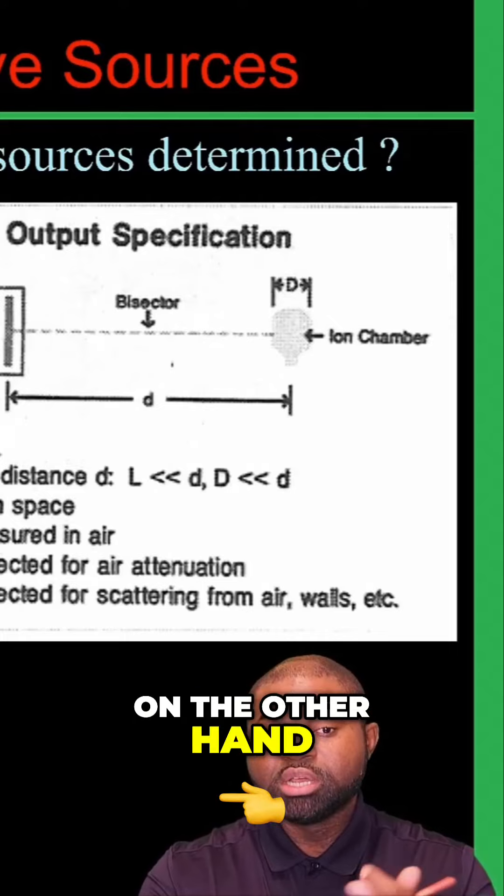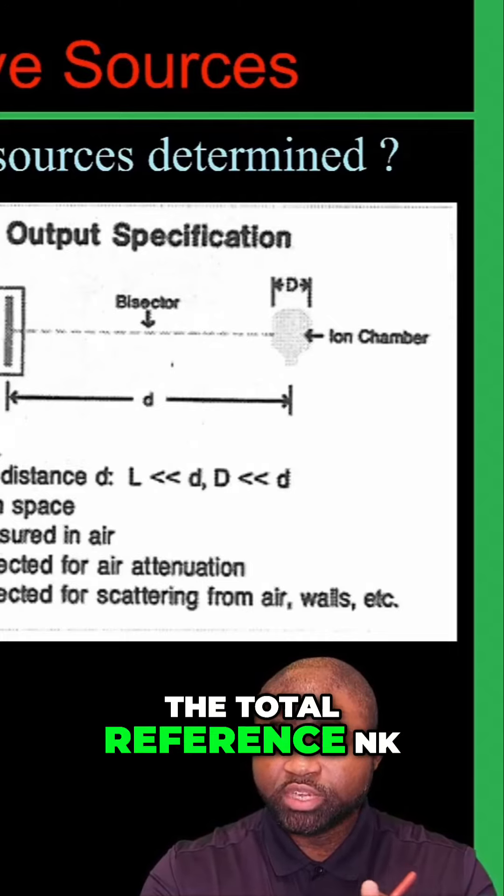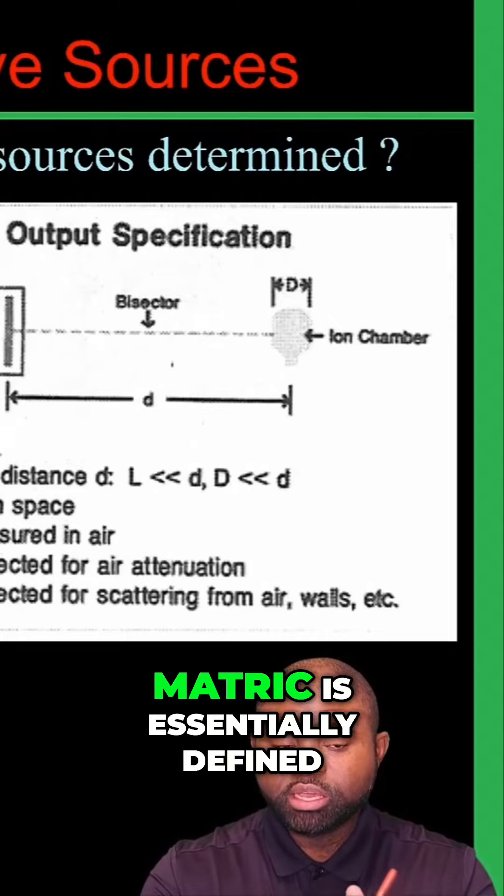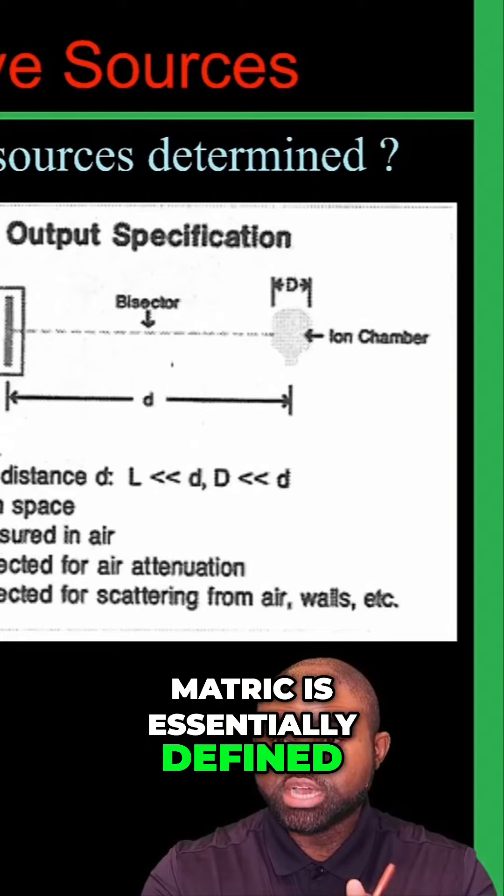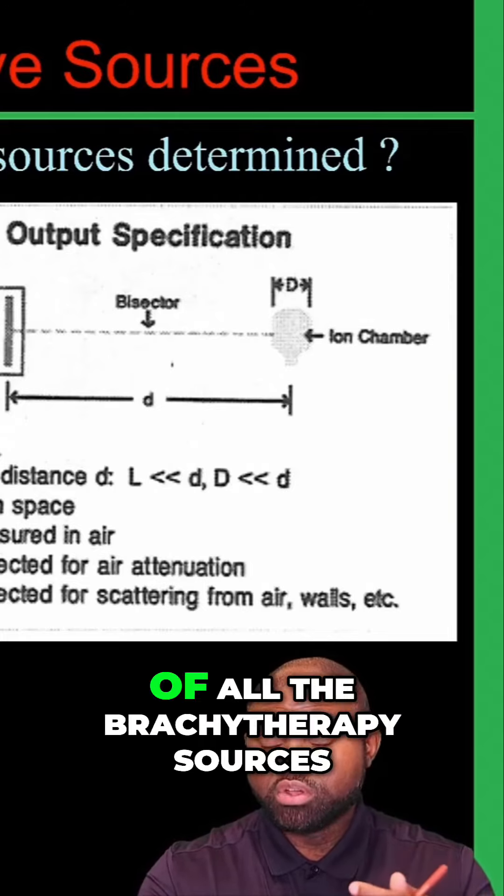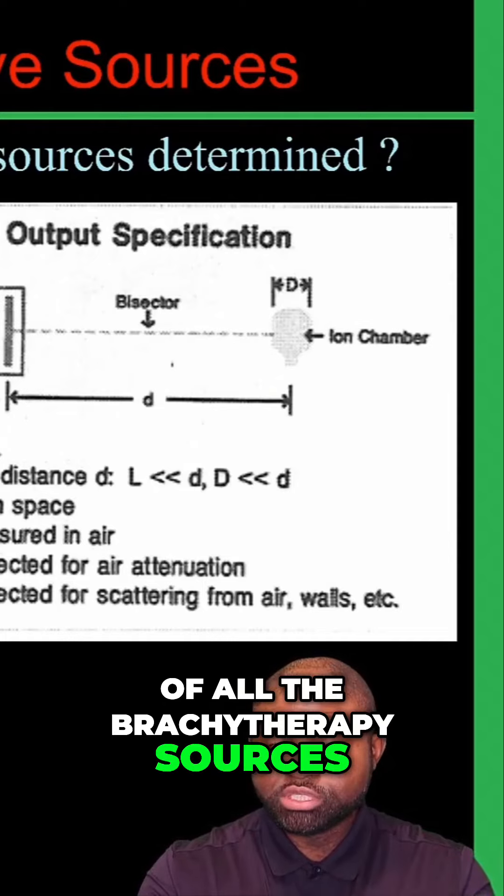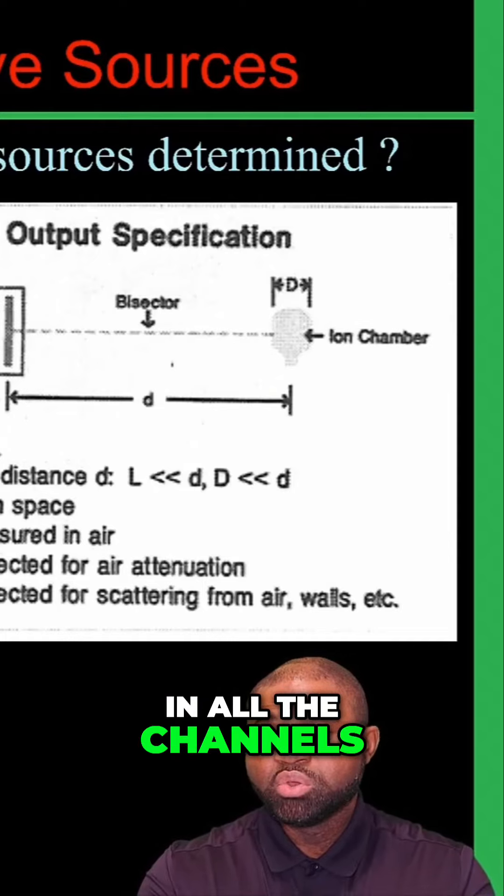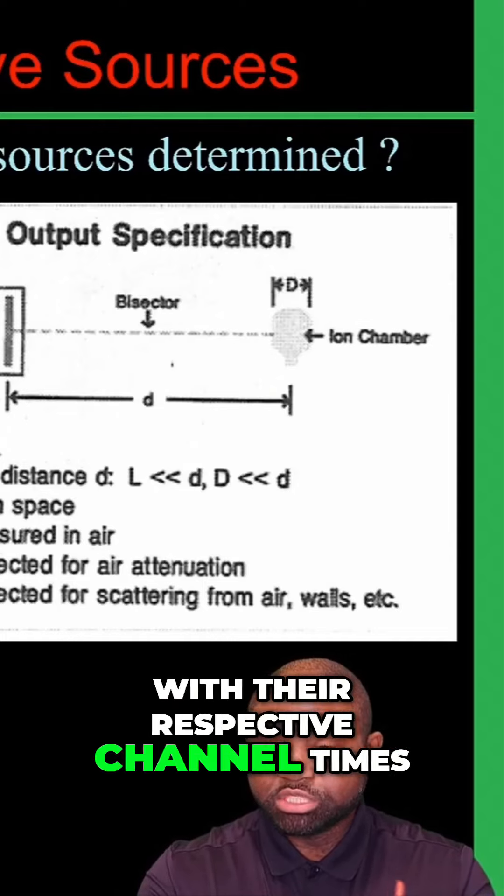On the other hand, the total reference air camera track is essentially defined as the product of the air camera rate of all the brachytherapy sources in all the channels with their respective channel times.